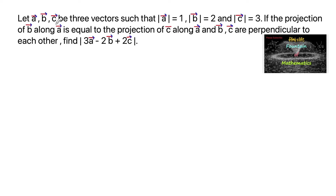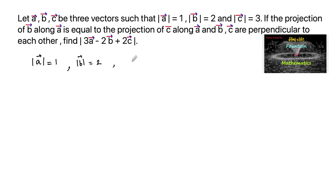Let A, B, C be 3 vectors such that their magnitudes: mod A is equal to 1, magnitude of vector B is equal to 2, and magnitude of vector C is equal to 3.